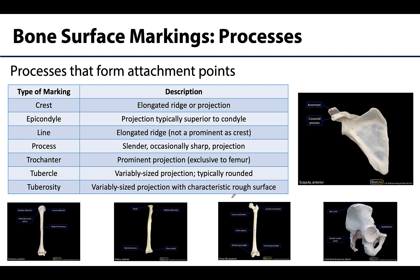The majority of types of processes are actually those that form attachment points for both muscle tendons as well as ligaments. We will talk about each one of these as we discuss the specific named bones in upcoming videos. But the size of these processes has everything to do with how many things attach there — and if a muscle attaches there, is that muscle contracting a lot and pulling on the bone more, say with weight-bearing exercise? If so, that process will be comparatively larger than in an individual who does not do weight-bearing exercise. Please refer back to these charts as we get into the bony specifics if you are having some confusion with the terms.